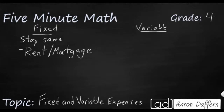A lot of times when parents are buying a car, what they do is they take out a loan, sometimes between 4 years, 5 years, even up to 7 years, and they split the amount of the car and the interest on the loan into equal payments. So that's typically a fixed expense — every single month they have to pay the exact same amount of money to pay off that car.